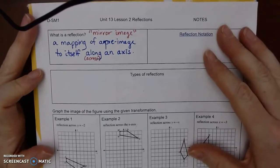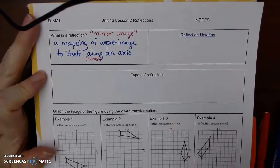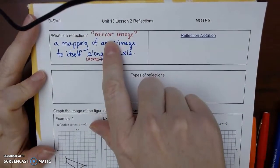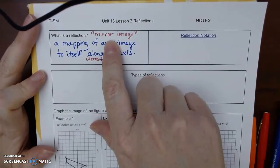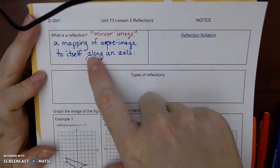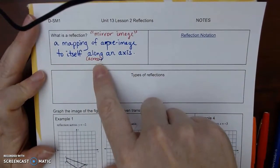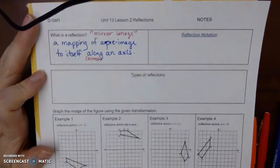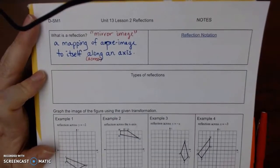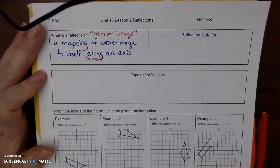Okay, so let's talk about Unit 13 Lesson 2, which is reflections. So what is a reflection? In common speak, it would be a mirror image. It is a mapping of a pre-image, which is the before, to itself across or along an axis. It could be a lot of different lines, so it's not always just horizontal or vertical; it can be diagonal as well.